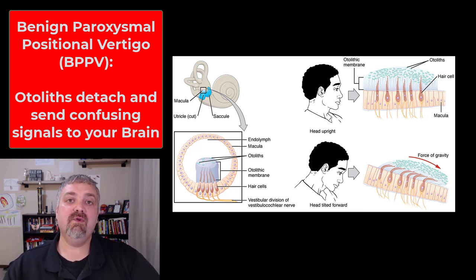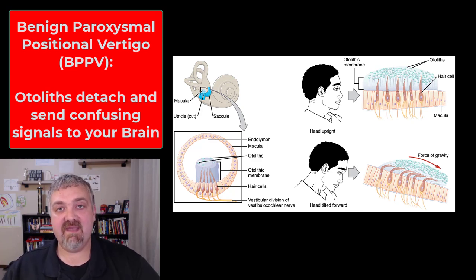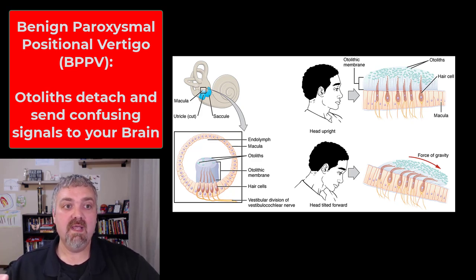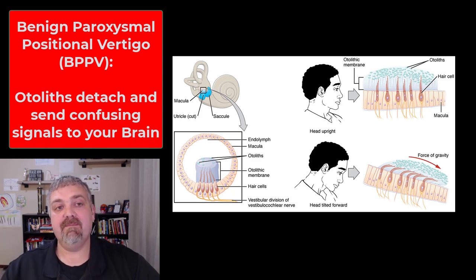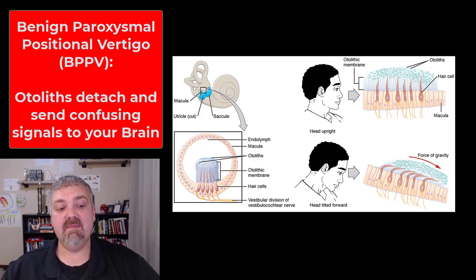So that's the saccule and utricle, which make up the vestibule — responsible for sending information to the brain about gravity and linear acceleration. I hope this helps. Have a wonderful day. Be blessed.